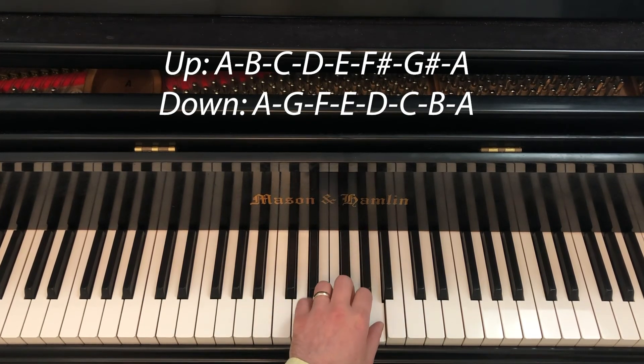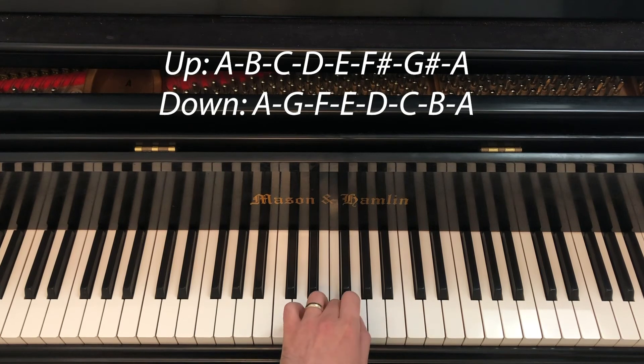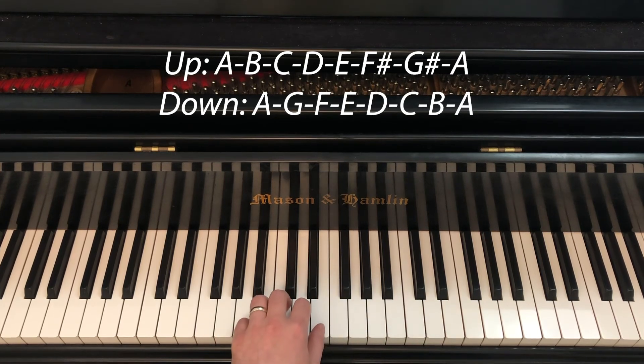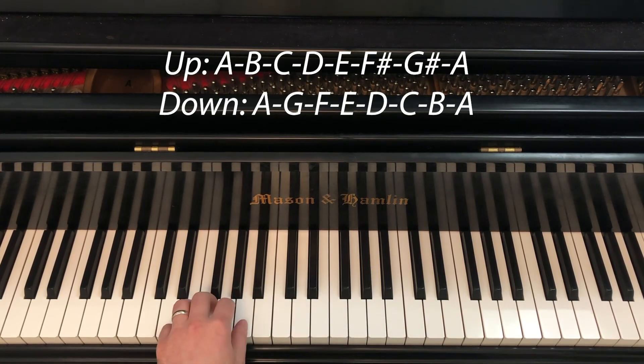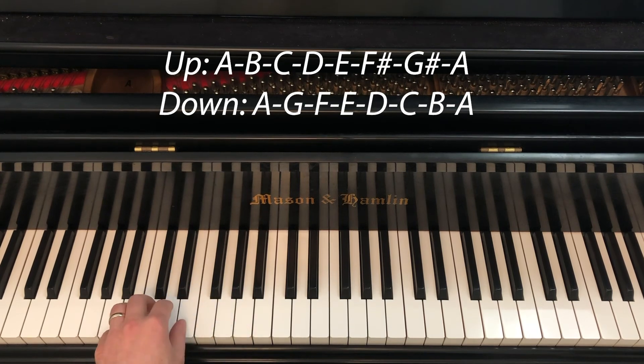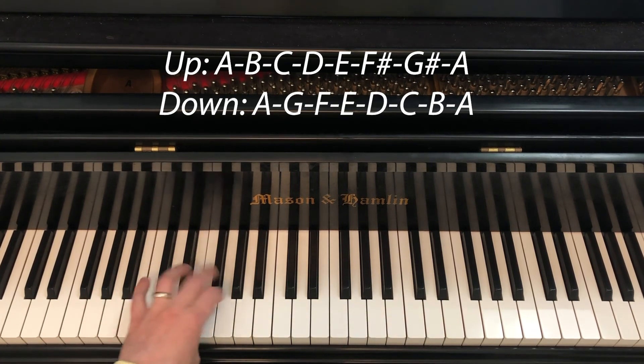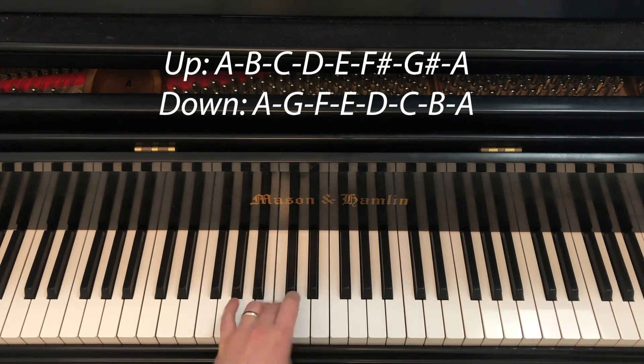Coming down, all white keys. Coming down 1 2 3 on A, 1 2 3 4 on E, 1 2 3 on A, 1 2 3 4 on E, and then the pinky finishes.